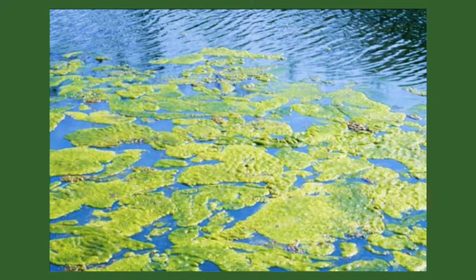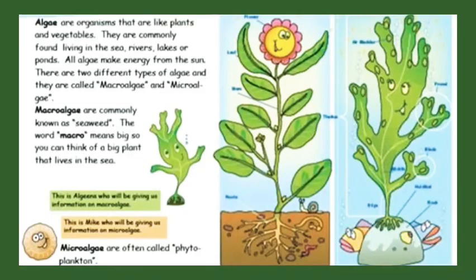Here you can see the picture of algae. Algae, as I told you, are commonly what we call 'pachi' in local language. What are algae? Algae are organisms that are like plants. They are commonly found living in the sea, rivers, lakes, or ponds. All algae make energy from the sun. There are two different types of algae: macroalgae and microalgae.